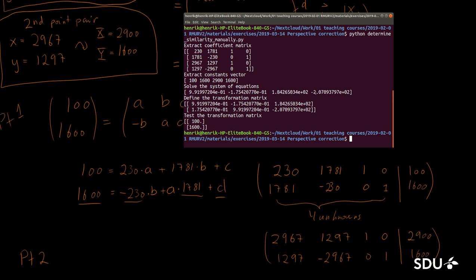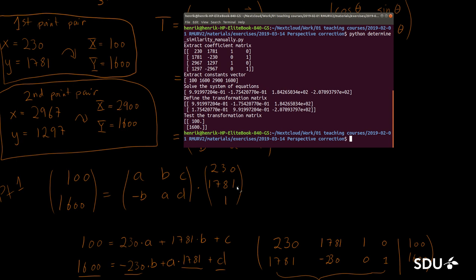These can be restructured into a transformation matrix with this structure. Finally we can test it by shuffling one of the points through the system, and we can see that it comes out at the exact same location as we expected it to. In fact it was this calculation down here that has been taking place, where we input this point in homogeneous coordinates and we get the 100 and 1600 point out of this.